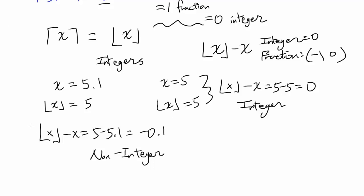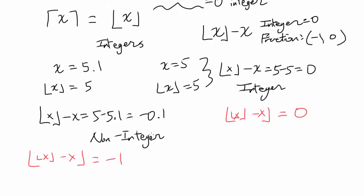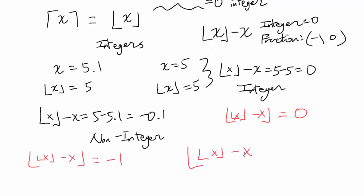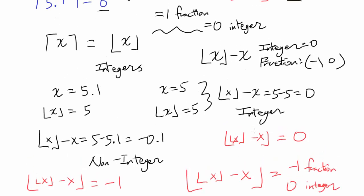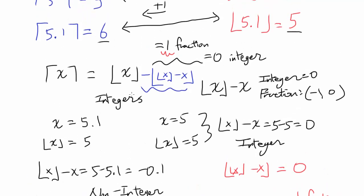Why don't we take floor of floor of x minus x? For non-integers, you're going to get negative 1. For integers, since what's inside was zero, this thing is going to be zero. So we have an expression — floor of floor of x minus x — which equals negative 1 for fractions and 0 for integers. We don't want negative 1; we want 1. So by subtracting this expression, we add 1 when it's a fraction and add 0 when it's an integer.